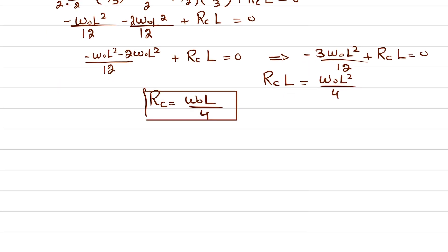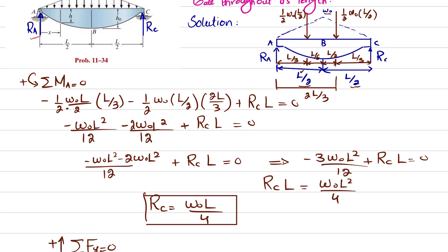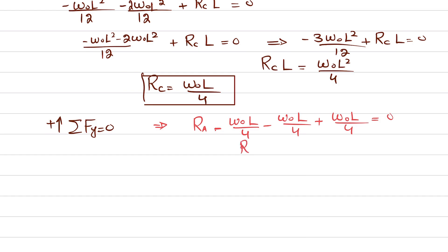Now we find Ra using the equilibrium condition that the sum of all forces in the y-direction equals zero, taking upward as positive. Ra minus w-naught·L/4 minus w-naught·L/4 plus Rc = 0. Since Rc = w-naught·L/4, we get Ra = w-naught·L/4. So both Ra and Rc equal w-naught·L/4.